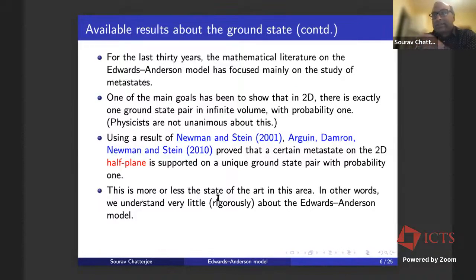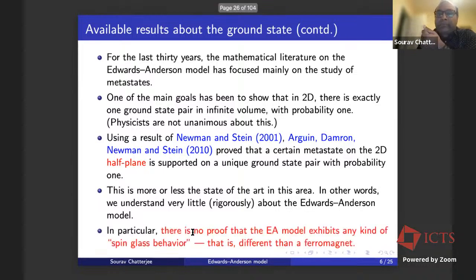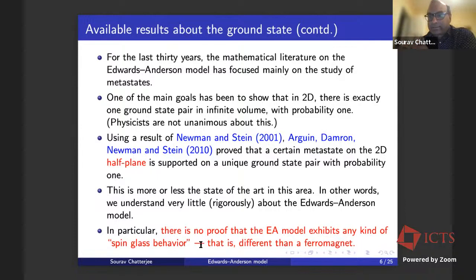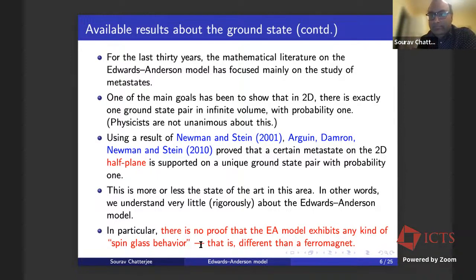There is very little that we rigorously understand about the Edwards-Anderson model. In particular, there is no proof that this model exhibits any kind of spin glass behavior different from a ferromagnet. We don't know how to prove there is a phase transition or any marker of spin glass type behavior — we don't know that this is actually a valid spin glass model in the sense of rigorous mathematics.